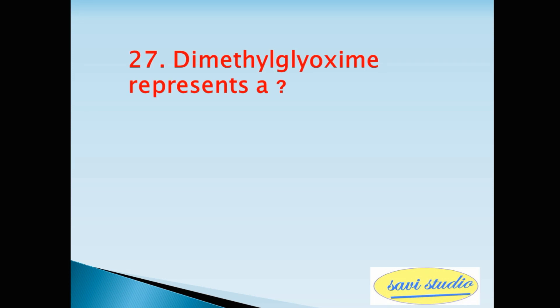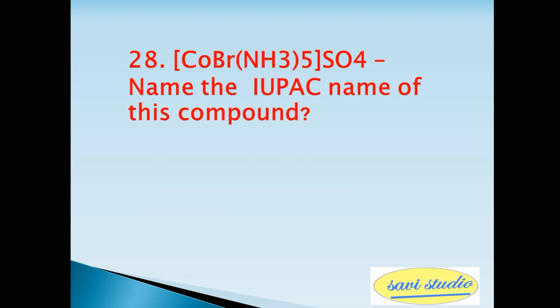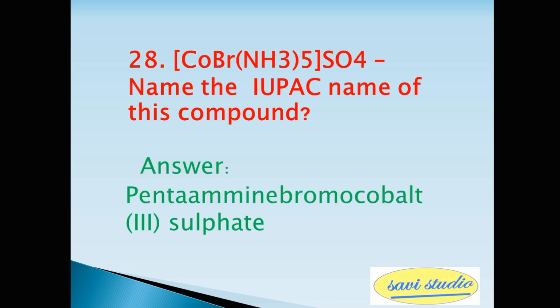Twenty-seventh question, Dimethylglyoxime represents a chelating ligand. Twenty-eighth question, COBr(NH3)5SO4, name the IUPAC name of this compound? Answer Pentaamminebromocobalt sulphate.